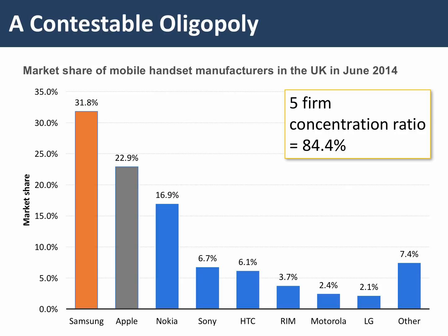You can see Samsung and Apple are way out ahead of the other firms. Together, those two firms have over 50% of the market. But if we put together Samsung, Apple, Nokia, Sony, and HTC, we find that those top five firms have over 84% of the industry. This is clearly an oligopoly.